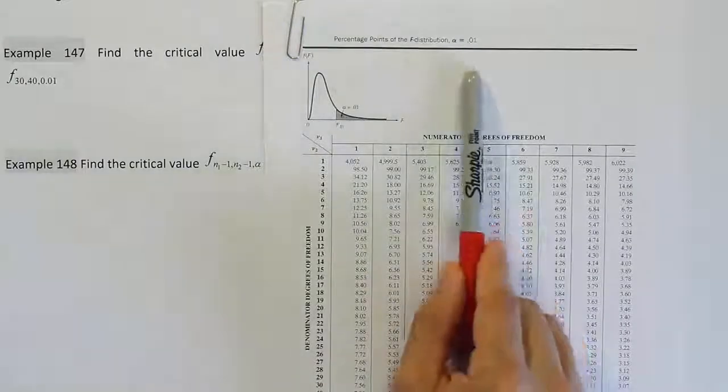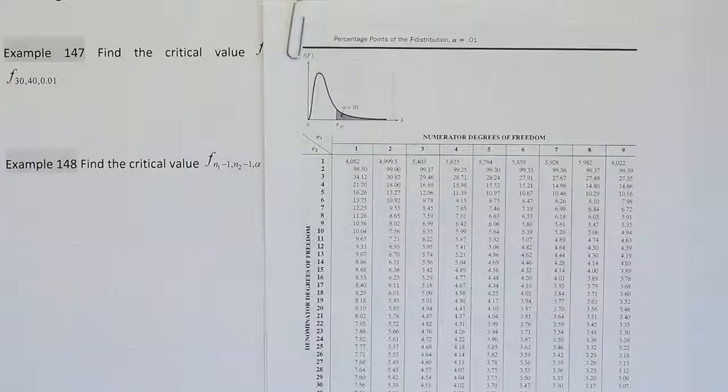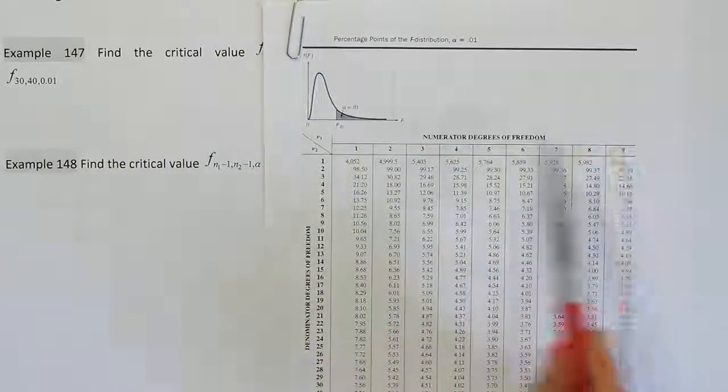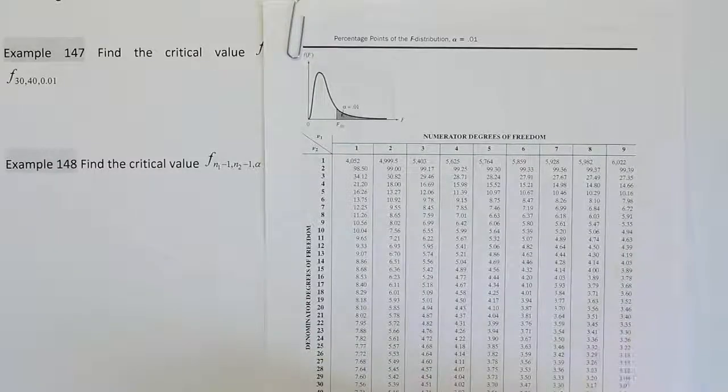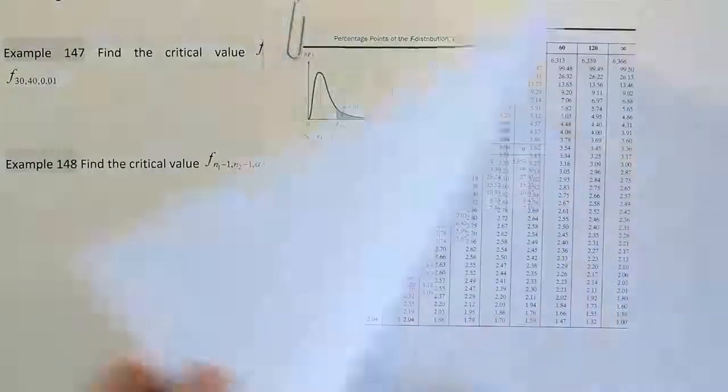But you'll go to the 0.01 table first, and then from there you look at the numerator degrees of freedom in this very top row and you would go over until you found 30. In this case it's actually going to be on a second page, so 30 would actually be on our next page.